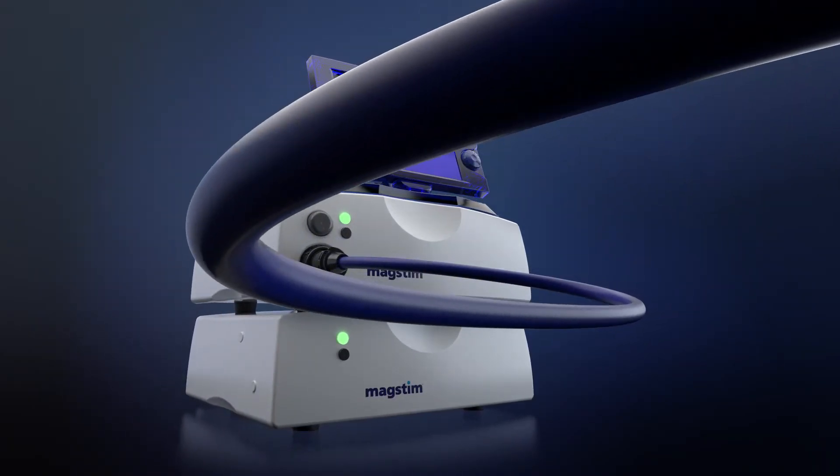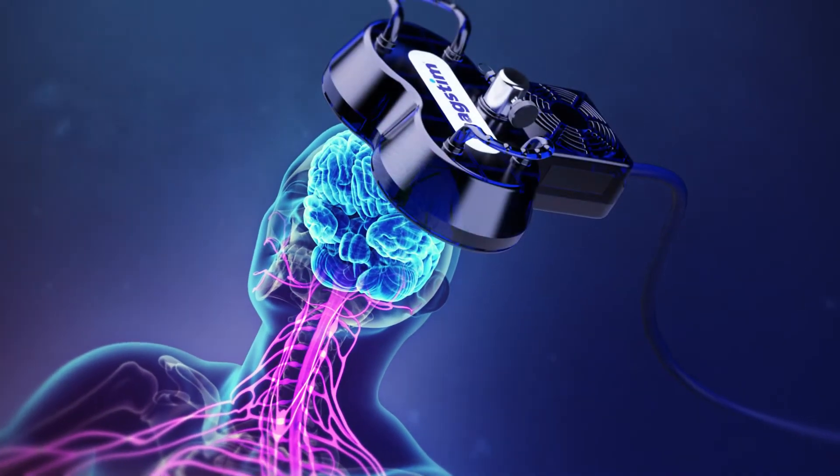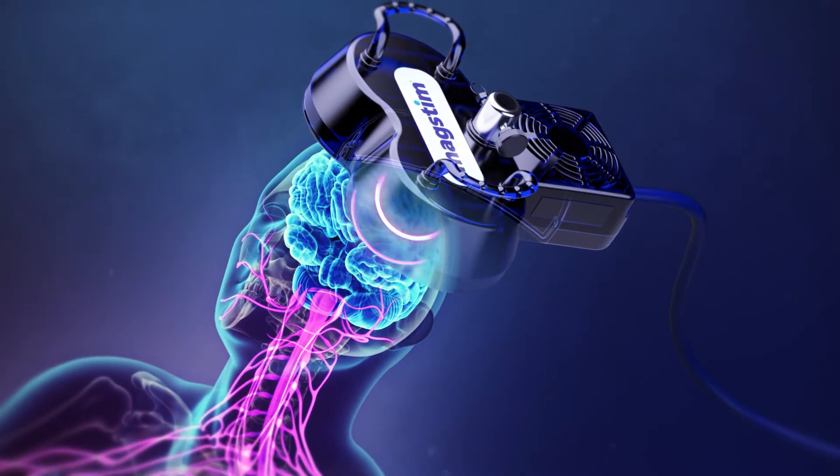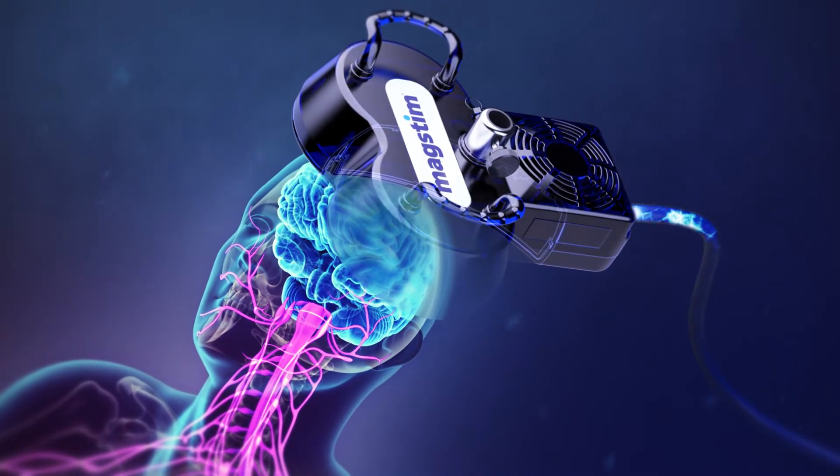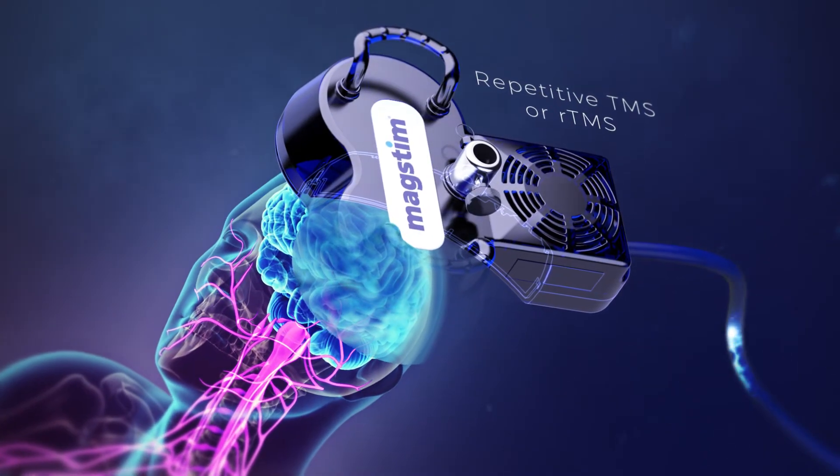During a TMS session, an electromagnetic coil is placed against your scalp, near your forehead. Treatment for depression involves delivering repetitive magnetic pulses, so it's called repetitive TMS or RTMS.